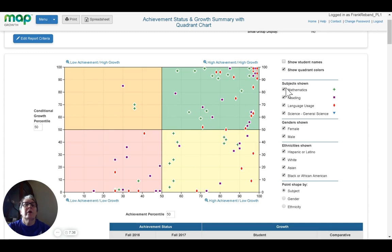If it's too crowded, I can show only math or reading. So in this case, let's show reading. I can uncheck all of the others. Now I only see the reading scores.